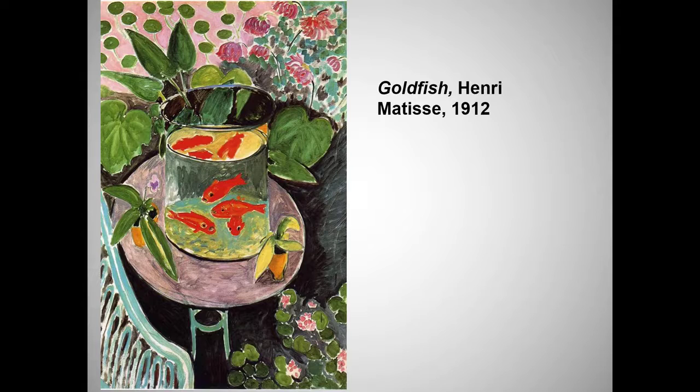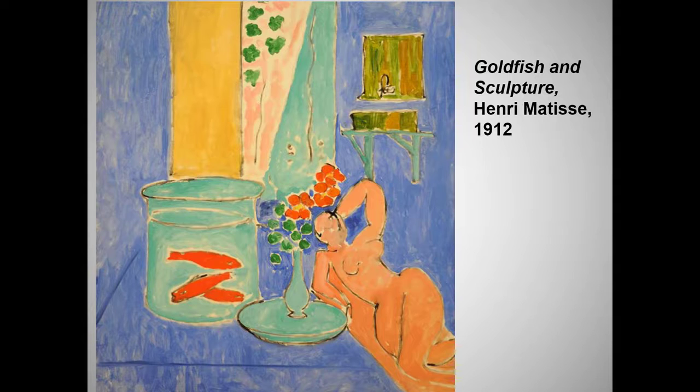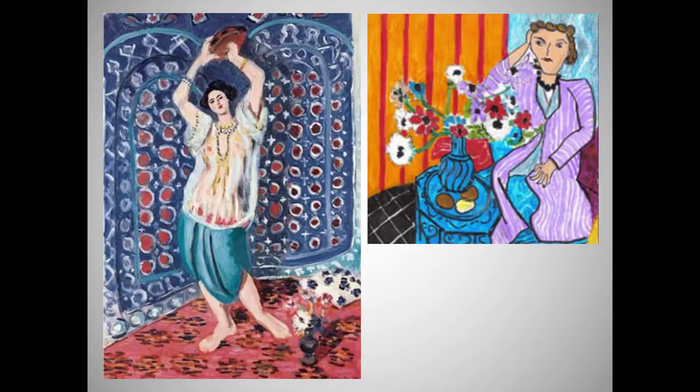Now that I've introduced Matisse, way too quickly, let's hear from a student presenter. You learn from your reading why Matisse was so fascinated with goldfish — remember that. Matisse was also fascinated with patterns, especially textile patterns, as you saw in our required work.